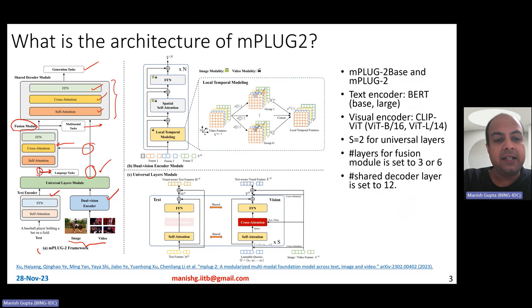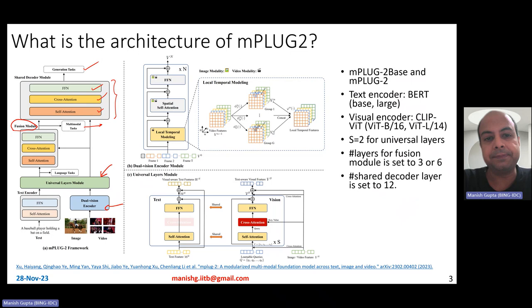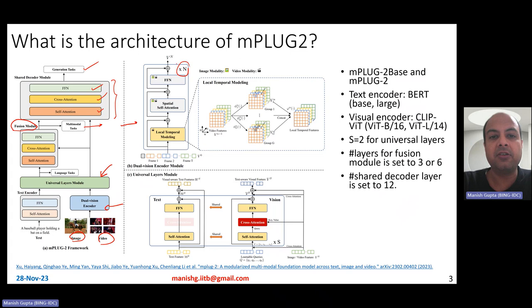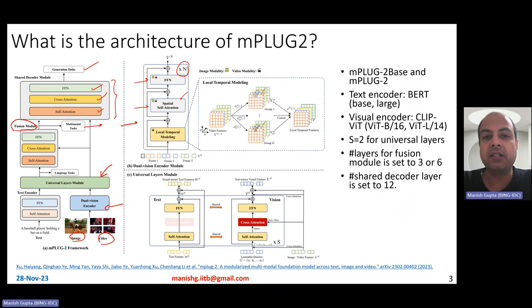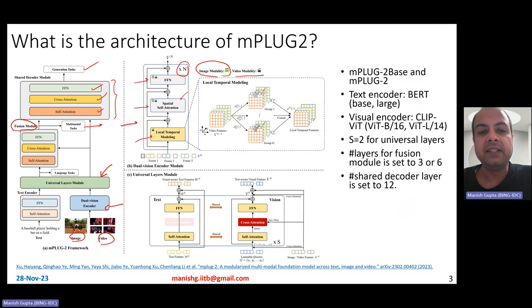There are a few new modules in this architecture. The dual vision encoder module encodes images and videos using multiple layers of a transformer encoder, with some changes. A typical transformer encoder contains self-attention and feed-forward networks. For the image modality, they use just those two sublayers. However, for the video modality there is also a third dimension of time, so they add an extra third sublayer called local temporal modeling. For images: two sublayers — special self-attention and feed-forward. For videos: three sublayers — local temporal modeling, special self-attention, and feed-forward.